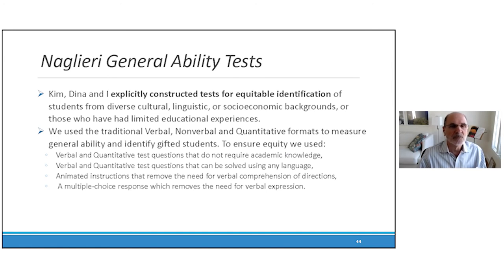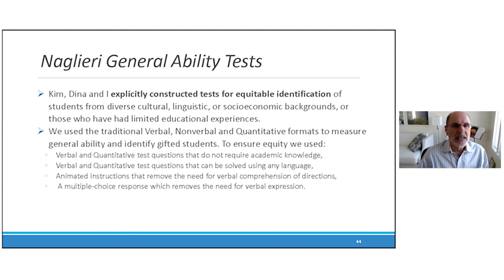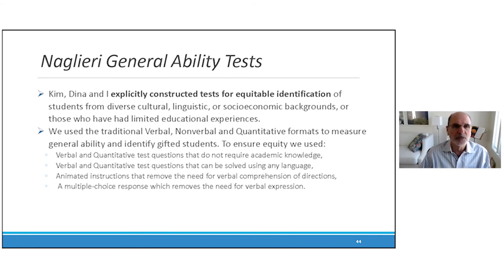How can you measure general ability equitably when you have a verbal test, a nonverbal test, and a quantitative test? That was our challenge. We decided we can do that. So these tests were explicitly constructed for equitable identification of those 848,000 children of color and those 250,000 ELL kids. That was our goal — to use the traditional verbal, nonverbal, quantitative format, but take out the knowledge from the content of the test questions and from the verbal and quantitative instructions, and do it in a way that did not require any kind of verbal expression.